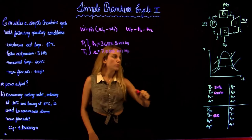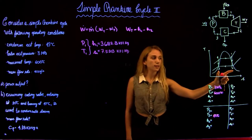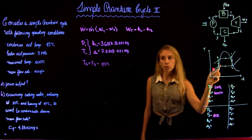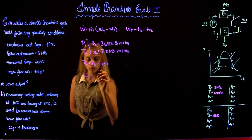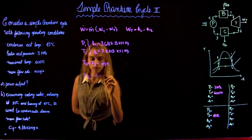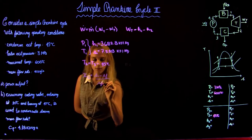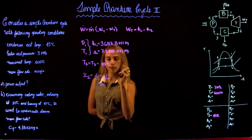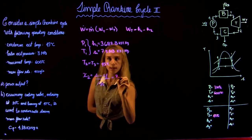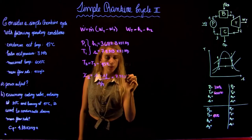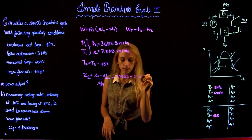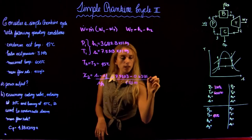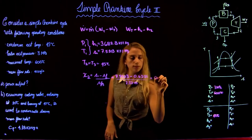Now for state 2 we don't have much, but we do know that T2 equals T3 equals 45 degrees Celsius. We don't know the quality so we need to calculate it. The quality at state 2 is equal to (S1 − Sf) / Sfg, and these values are obtained from table A4 at 45 degrees Celsius. So x2 = (7.5103 − 0.6386) / 7.5247, which gives us a quality at state 2 of 0.913.